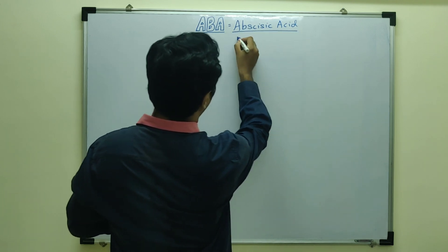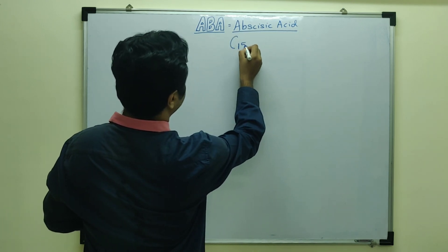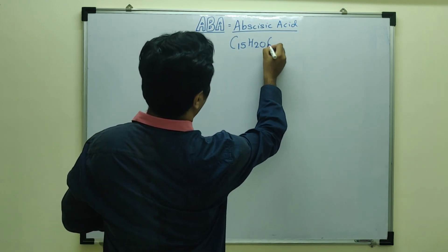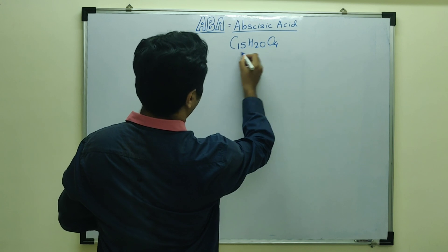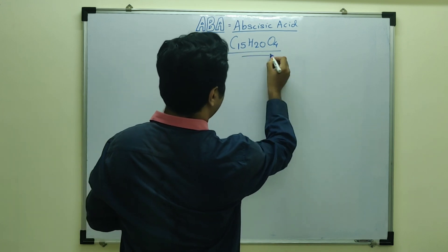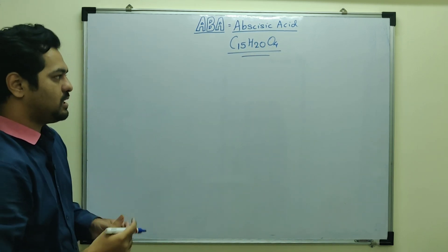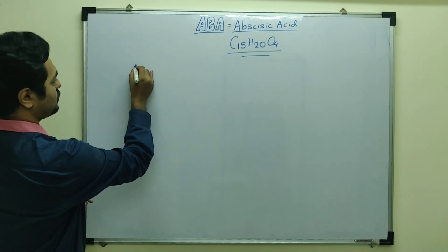Abscisic acid has the molecular formula C15 H20 O4. Try to remember this molecular formula.